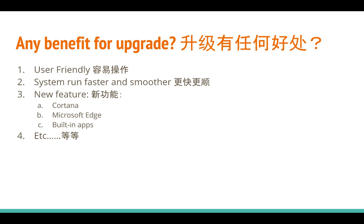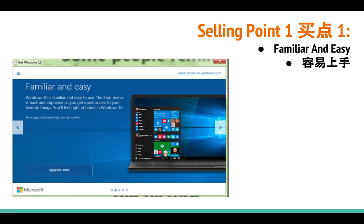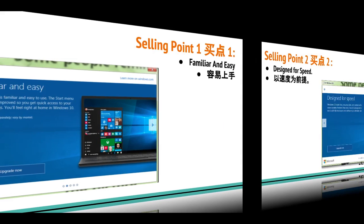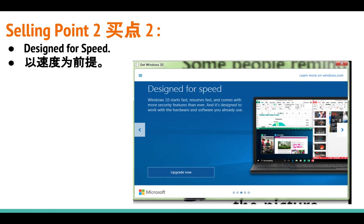The system is user-friendly, runs faster and smoother, and has some new built-in features. Selling point 1: it is familiar and easy to use — especially if you are coming from Windows 7 or Windows 8. Selling point 2: Windows 10 is designed for speed — it will run smoother and faster than previous Windows versions.